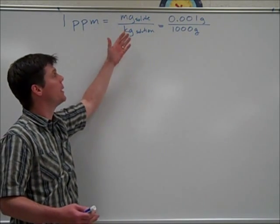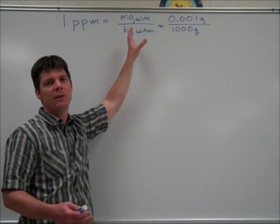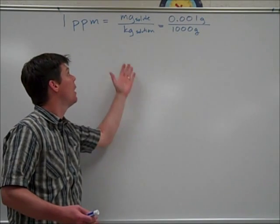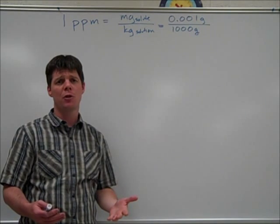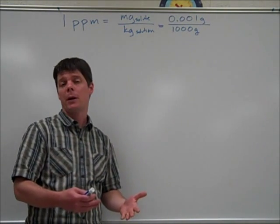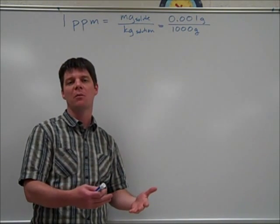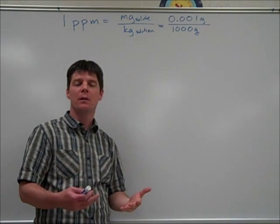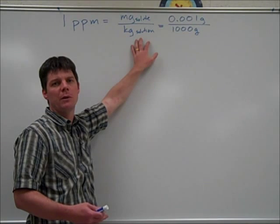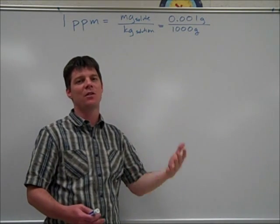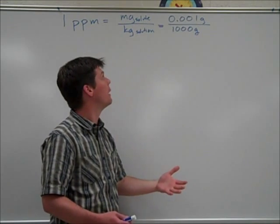Parts per million can be interpreted as how many milligrams of a solute—that would be the barium in this case—are dissolved in one kilogram of solution. Now technically, the kilogram of solution is the water that the barium is dissolved in plus the small mass of barium. For this example, we're going to just ignore that mass of barium as it contributes to the mass of the overall solution because it's such a small mass of barium.